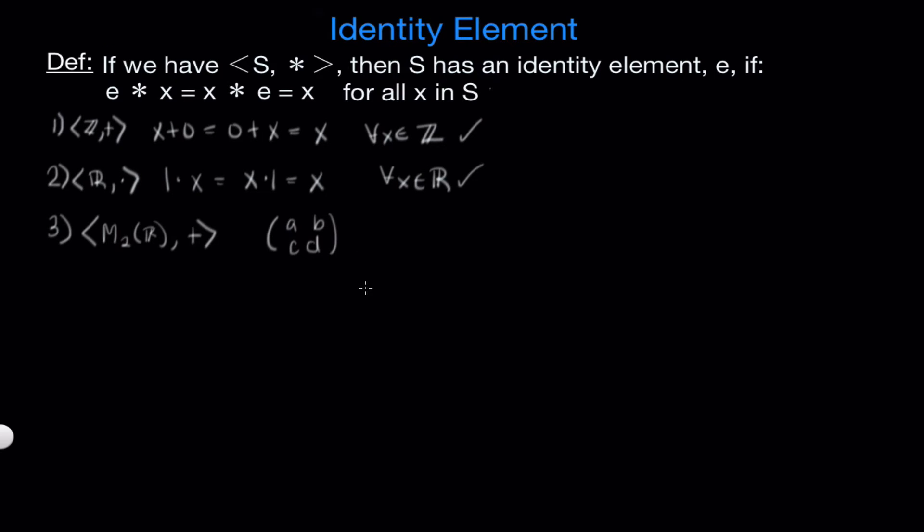And we want to know if this structure has an identity element. So we want to be able to add another 2x2 matrix to this and somehow still end up with the original one that we put in. So of course the zero matrix will do this. If we have all zeros for entries and we add these, it just gives us exactly what we put in. So our zero matrix would be the identity element for this one.